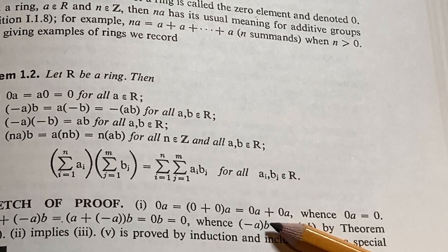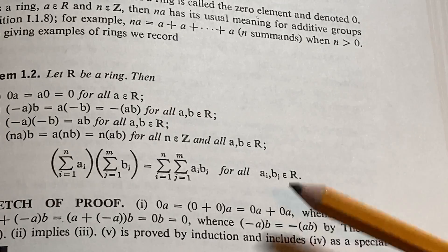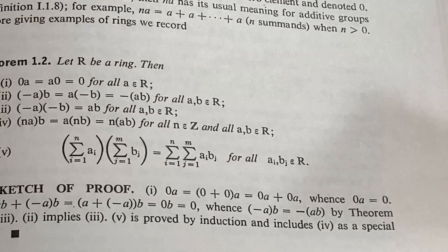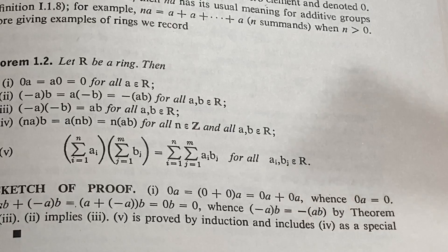And then they just subtract 0a from both sides. You might say, why can you do that? That is from something called the cancellation law.